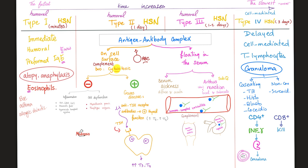Type 4 is the most delayed — about 72 hours, slightly less or more. This is cell-mediated immunity. I'm not going to send antibodies to destroy; I myself will go kill that bacteria face-to-face, cell-to-cell. We are T lymphocytes — we have cytotoxic T cells. If I can kill the invader, I destroy it. If I can't kill it, at least I can surround it in a granuloma. The granuloma can have caseating necrosis — as in tuberculosis, histoplasmosis, blastomycosis, coccidioidomycosis — or it could be non-caseating, such as sarcoidosis.